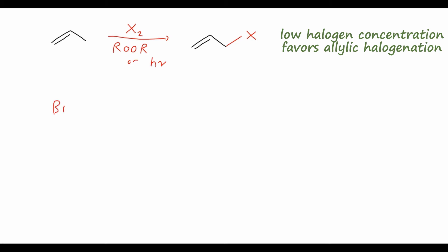Well, let's use bromine as an example. We start with our Br2 molecule, and we know that by using some ultraviolet light, or maybe a peroxide, we can homolytically cleave this bromine-bromine bond, and that will give me two bromine radicals.